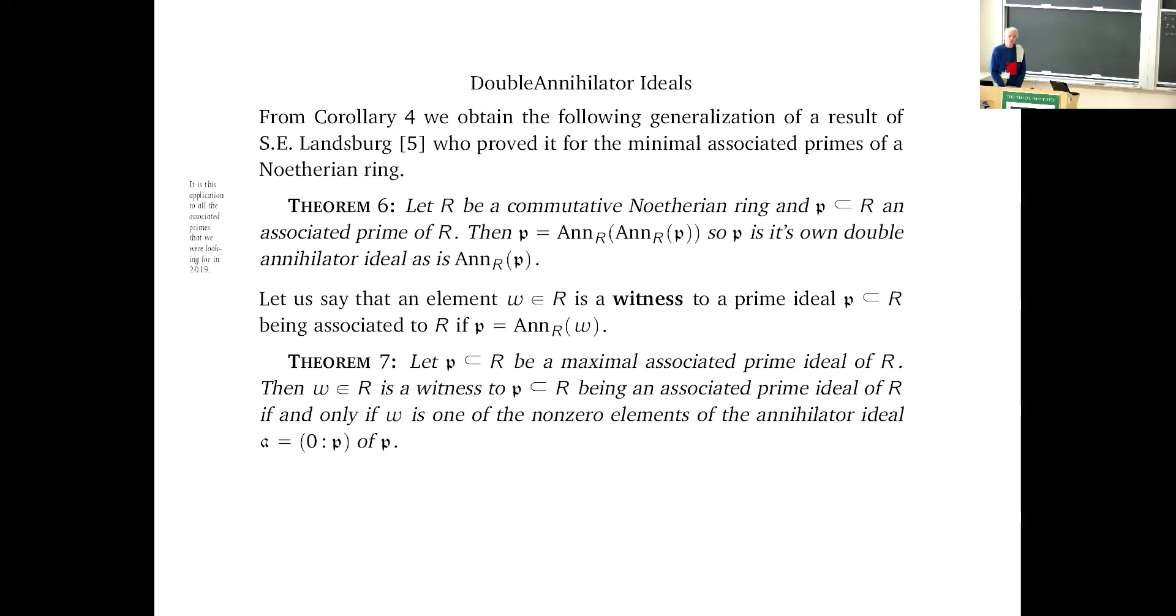So how do you find the witnesses is basically what the question is in back of this. And here's an answer: if the prime P happens to be a maximal associated prime ideal of R, meaning that amongst all the associated prime ideals of R, it's not included in another one, it's maximal in that sense, then the witnesses are exactly the non-zero elements in its annihilator ideal. Well, that's a nice result because it tells you if you have an ideal that's unmixed, you know how to find witnesses for the prime ideals if you know the prime ideals which you're associated with.